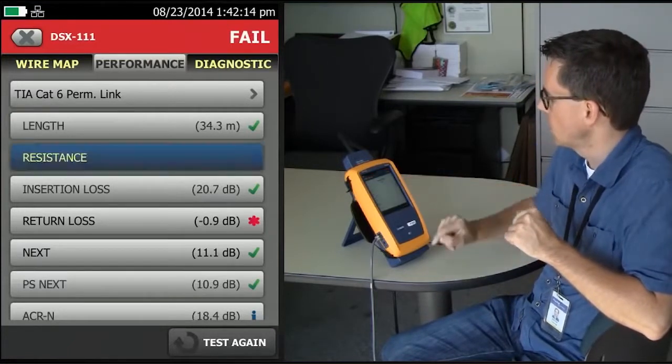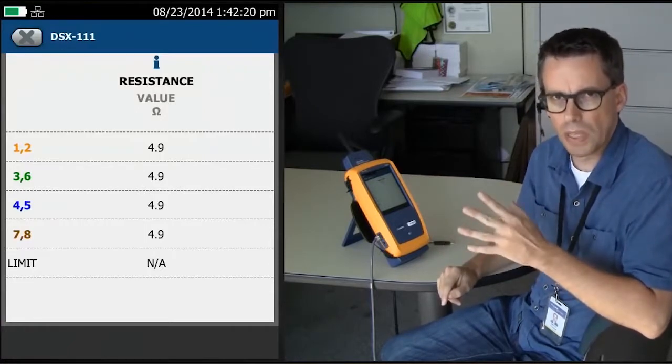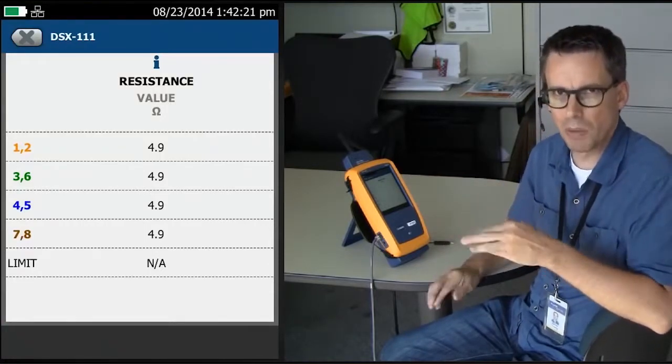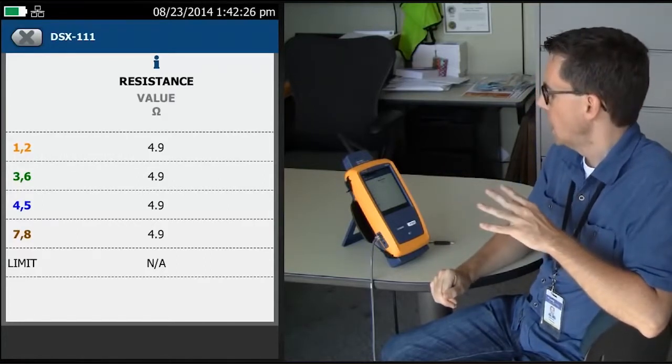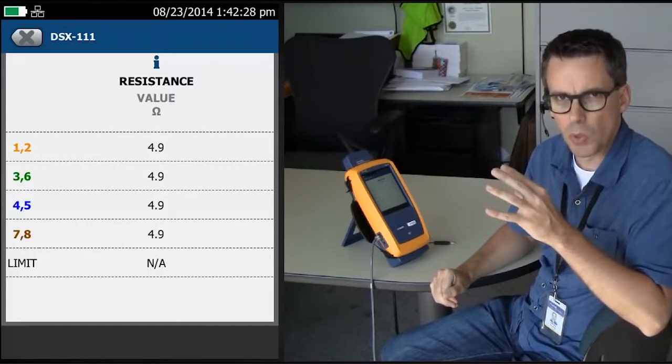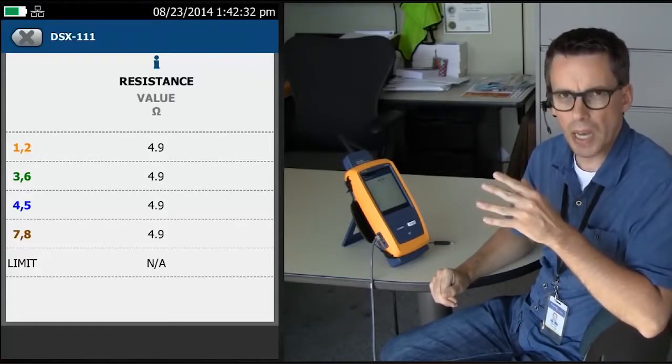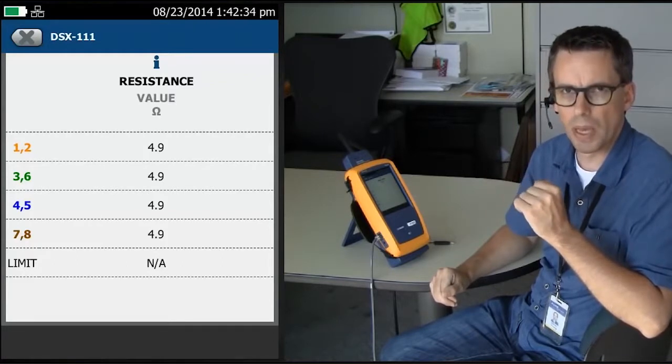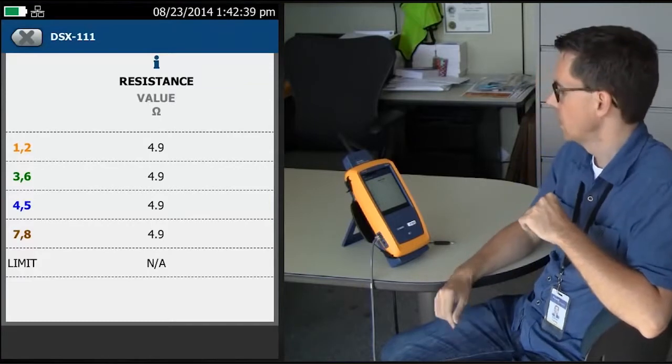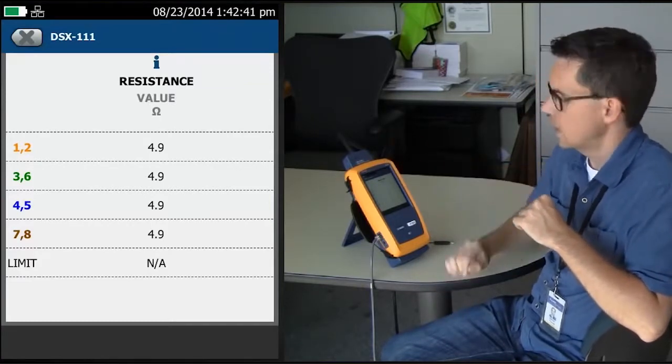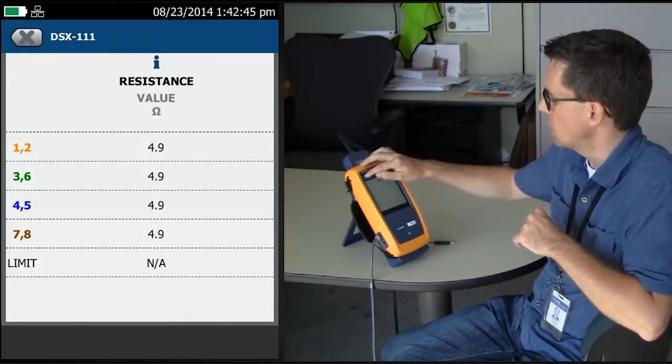So we're going to tap Resistance and make sure that all of these four pairs are roughly the same. Of course, they're not going to be exactly the same because you've got the different twist rates in the pairs. On a longer link, you'll see more separation between the pairs. So as long as they're not more than about an ohm and a half or two ohms difference between the pairs, then you know you don't have a DC contact resistance issue. So everything is pretty much the same here. So we don't have a DC contact resistance issue.